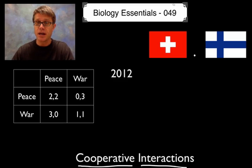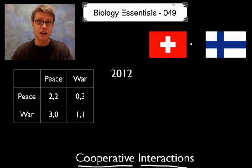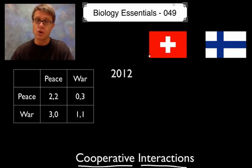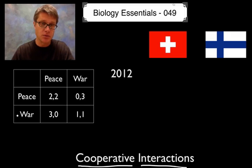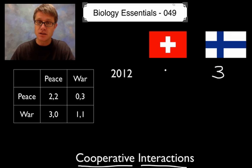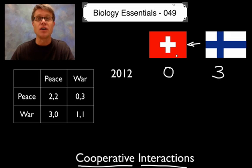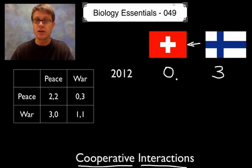Let's say the year is 2012 and the country of Finland decides to invade Switzerland. This is probably not going to happen — they both have neutrality agreements they've signed. But let's say Finland decides to go to war with Switzerland. If we look at the payout: Finland gains 3 units and Switzerland gains 0 units. If Finland invades and steals all the Swiss Army knives, they gain from that — Switzerland gets nothing.